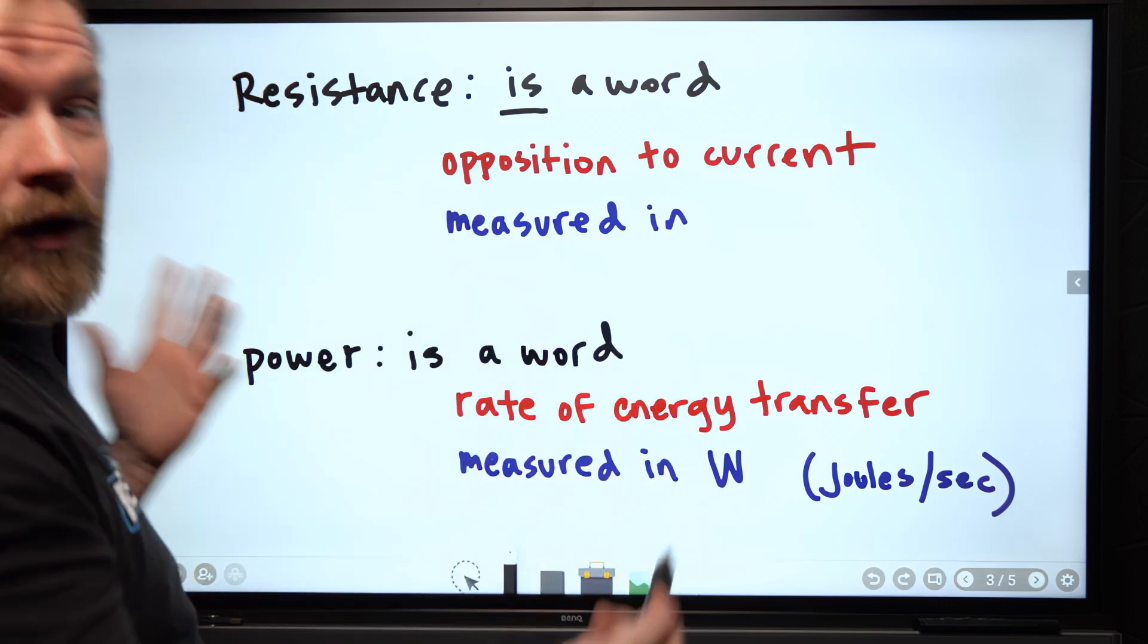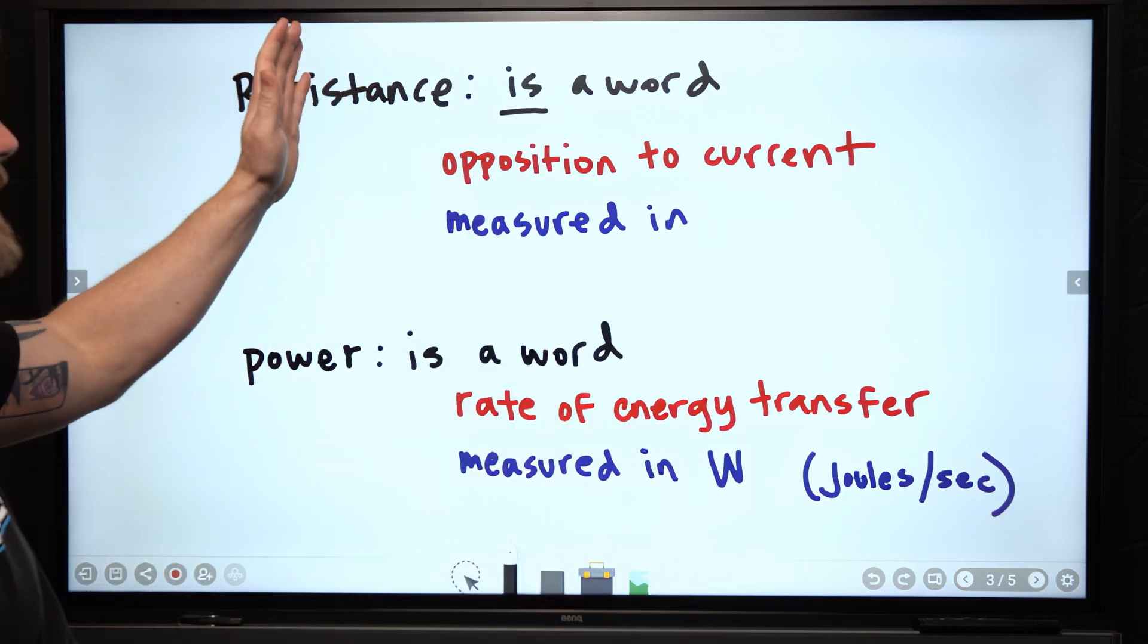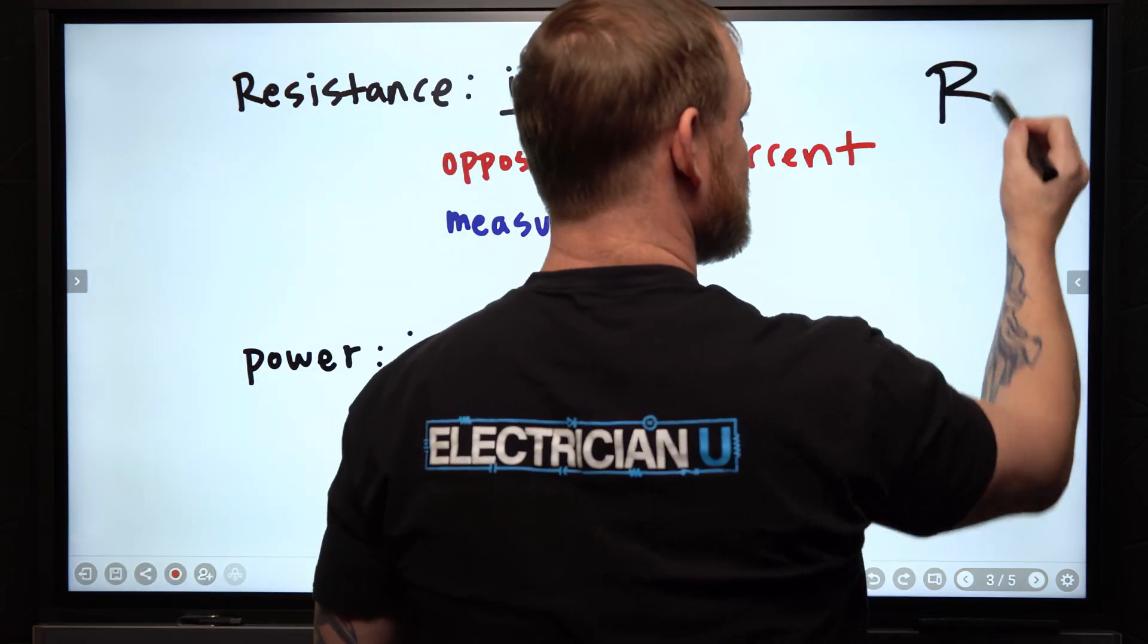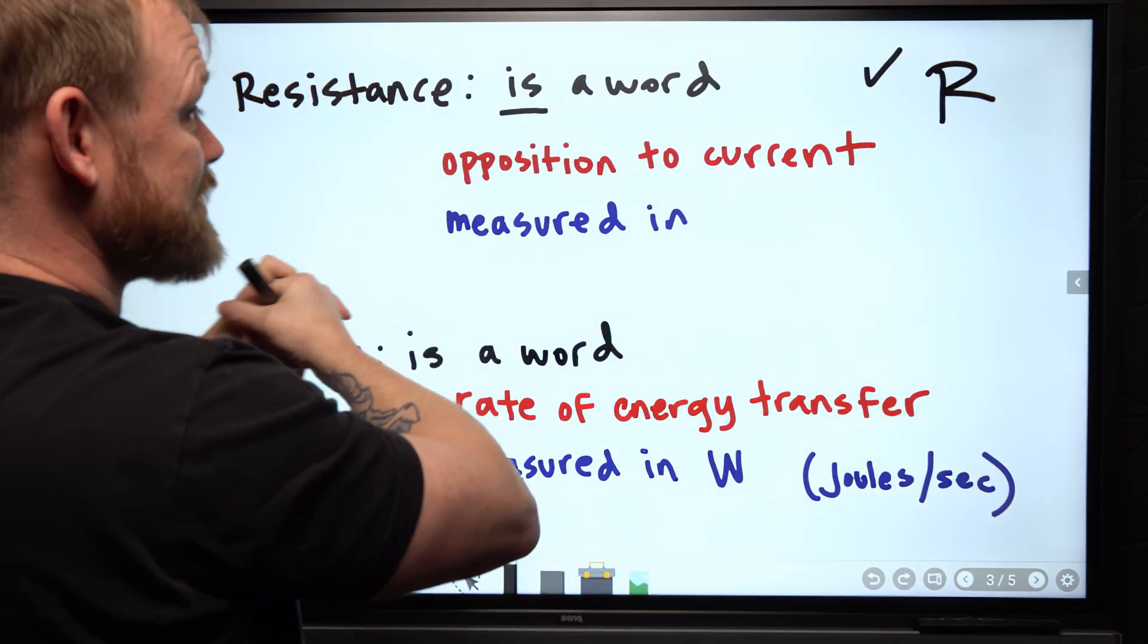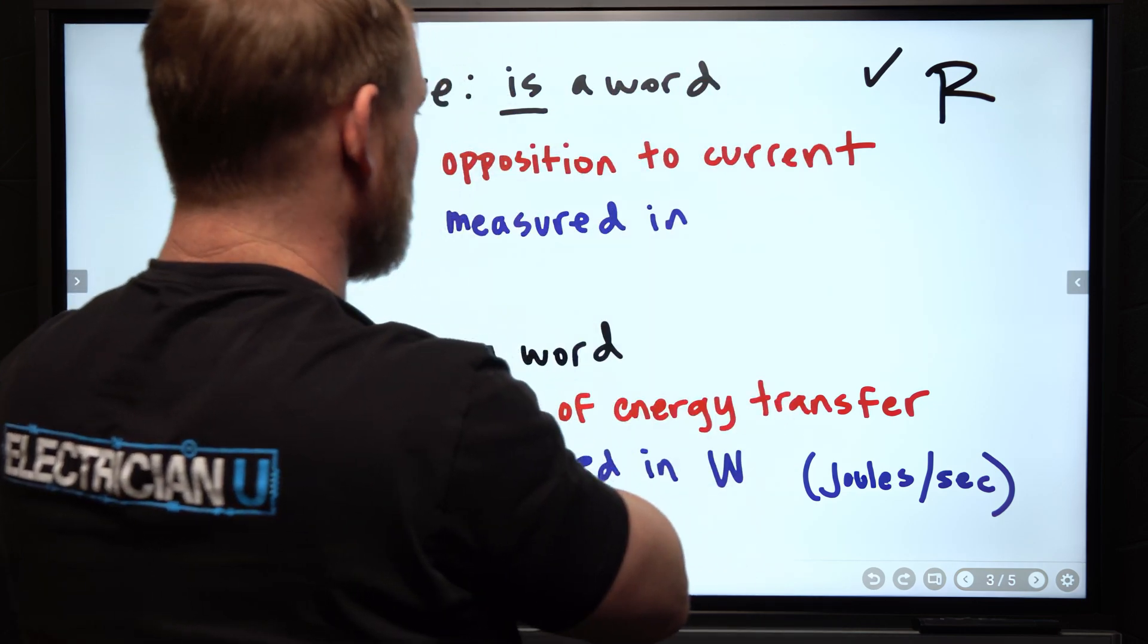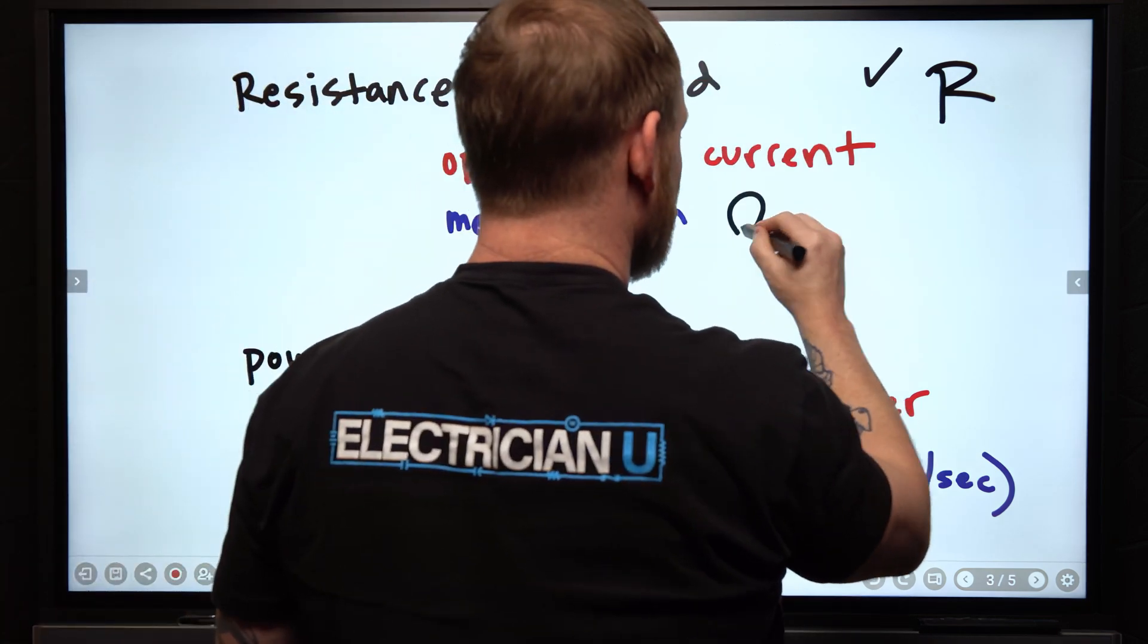Now, where we do get it right is the other ones that we use. So we use resistance. We use R. This is good. This checks off. We're measuring a thing called resistance, which is in opposition to current flow. And it is measured in ohms.